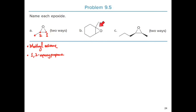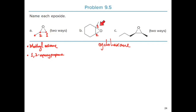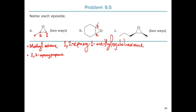For the second molecule, we have a cyclohexane ring with an epoxide attached. Treating the epoxide as a substituent, we name it as an epoxy alkane. The carbon bearing the methyl group is C1, and the adjacent epoxide carbon is C2. Since a methyl group is also on C1, the name is 1,2-epoxy-1-methylcyclohexane.